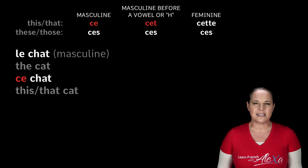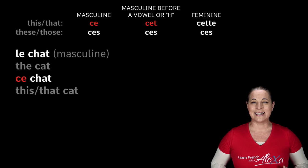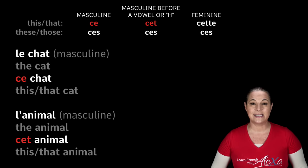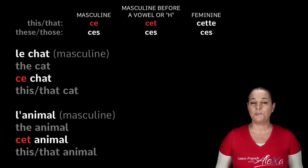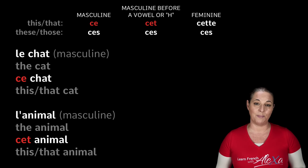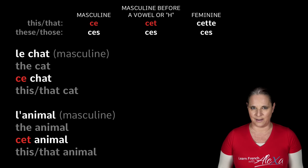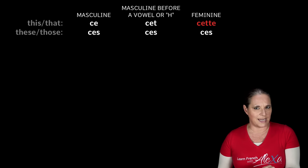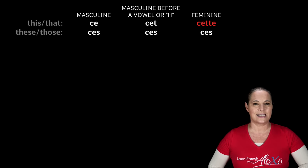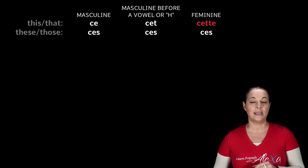But when you say this animal, you would say cet animal, because animal begins with a vowel and animal is masculine. This, when using a feminine word, is cette, C-E-T-T-E.